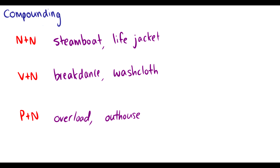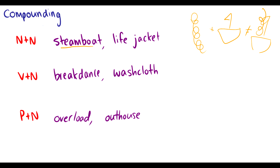Compounding is putting words together to form new words. We can put a noun and a noun together to create new words. For instance, steamboat — steam and boat, both nouns. What about life jacket? You have life as a noun and jacket as a noun. What's important is that these two words, when they join together, form a new meaning. Steam plus boat does not simply create a boat with steam on it — it's very different.